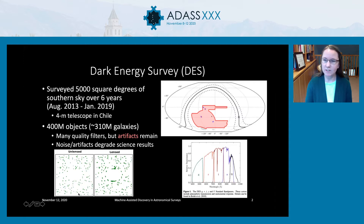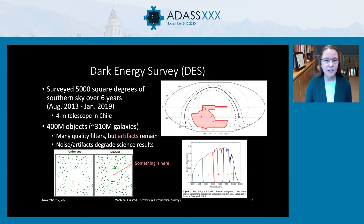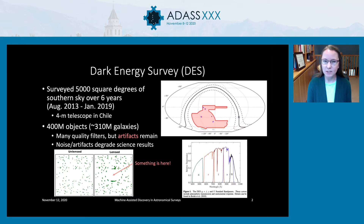If you have a bunch of sources in the sky that are just sort of randomly distributed, you might have a bunch of point sources like on the left. However, if you see a systematic distortion of the light from those sources where they've been stretched and modified, you might be able to infer that there's some mass, even if you can't observe it, that's affecting the light from those other sources. So very careful measurements of the shape parameters of those galaxies can help us infer the presence of dark matter. However, if you've got corrupted data in there, you may incorrectly conclude what those parameters are.